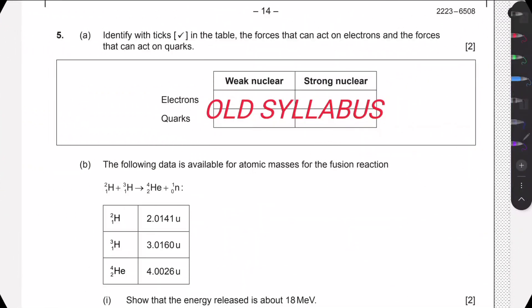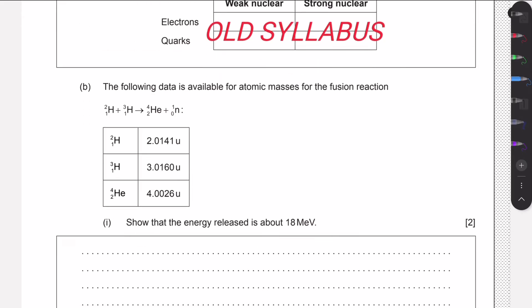Hello guys, welcome to this new video. This is question 5 in the May 2023 timezone 1 paper 2. In this first question we are asked to determine different properties. These are no longer in the syllabus, so we don't learn about quarks or the weak nuclear force. This box would not have to be ticked as electrons do not interact with the strong nuclear force — the strong nuclear force is just between protons and neutrons to keep the nucleus together. But this question is no longer required.